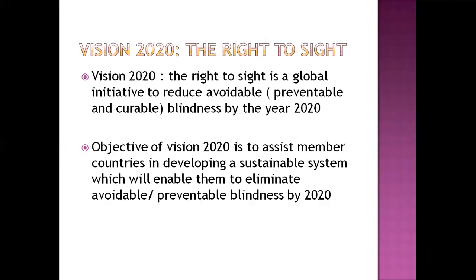Vision 2020: The Right to Sight is a global initiative started by WHO and the UN. The main aim of this initiative is to reduce avoidable or preventable blindness by the year 2020. The objective is to assist member countries in developing a sustainable system to prevent and eliminate avoidable blindness.